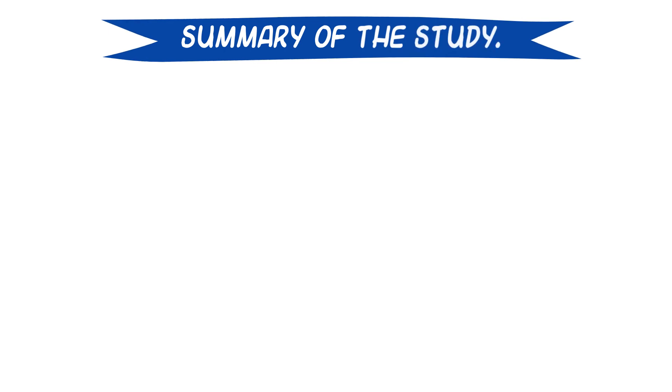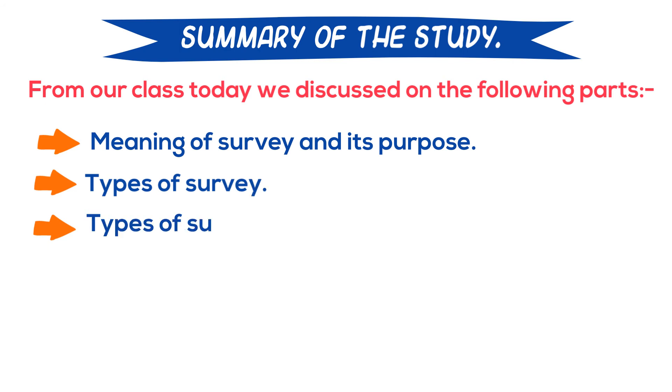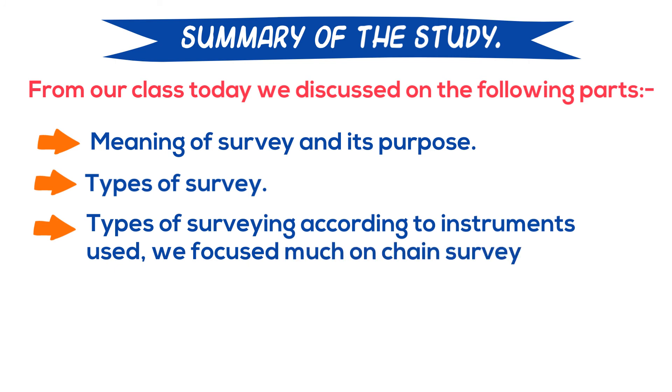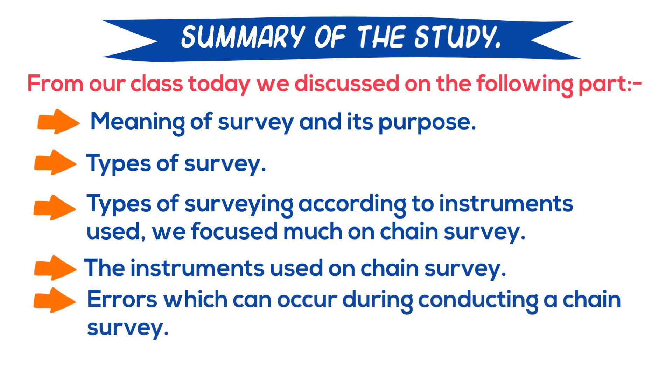Summary of the study. From our class today, we discussed on the following parts: meaning of survey and its purpose, types of survey, types of surveying according to instruments used. We focused much on chain survey, the instrument used on chain survey, errors which can occur during conducting a chain survey, and advantages and disadvantages of chain survey.